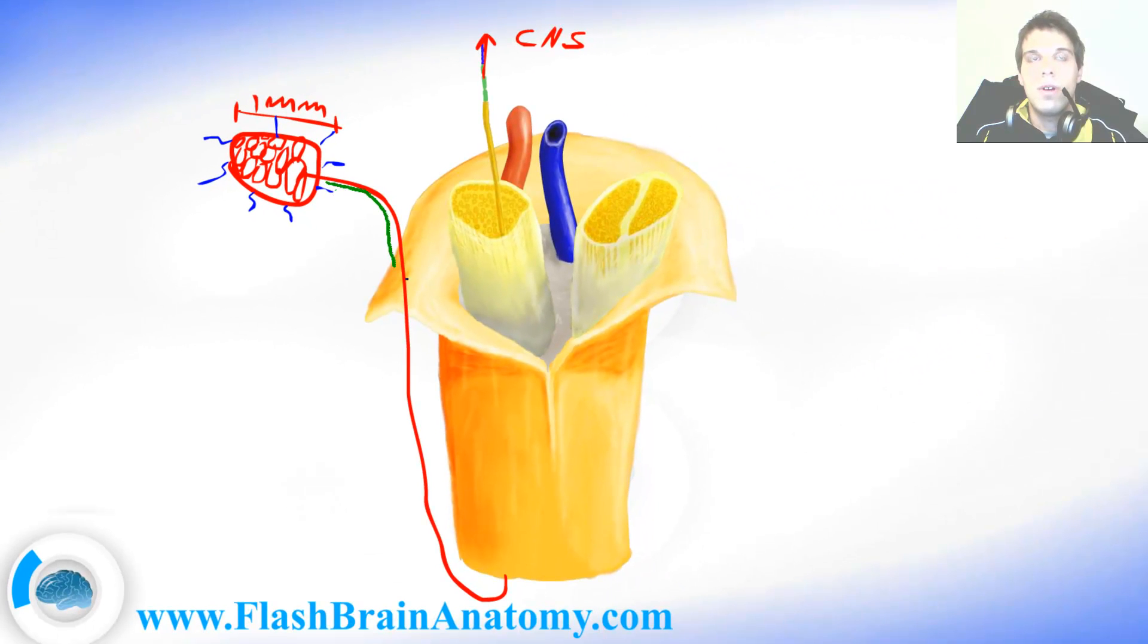Now this over here what I have drawn is the axon. It takes the signal all the way through the peripheral nerve to the spinal ganglion and then to the spinal cord.